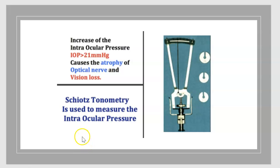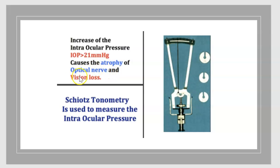Glaucoma is the increase of intraocular pressure over 21 mmHg, which can cause atrophy of the optic nerve and vision loss.